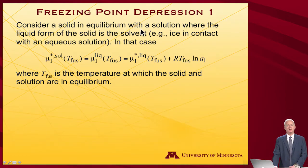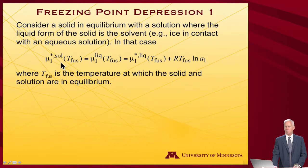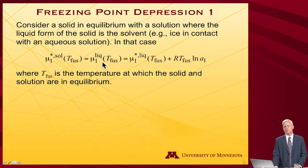Let's consider a solid in equilibrium with a solution where the liquid form of the solid is the solvent. That is a melting process. Water is a wonderful solvent, so think about ice in contact with an aqueous solution. At some temperature, which we'll call the temperature of fusion, the chemical potential of the solid — a pure substance, indicated by the asterisk superscript — will be equal to the chemical potential of the liquid. That's what it means to be at the melting or freezing point. And because this is a liquid solution, its chemical potential will be the chemical potential of the pure liquid plus RT times the log of the activity.